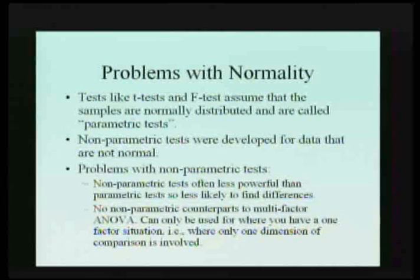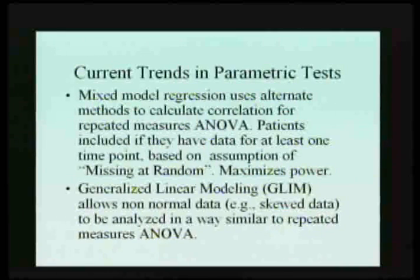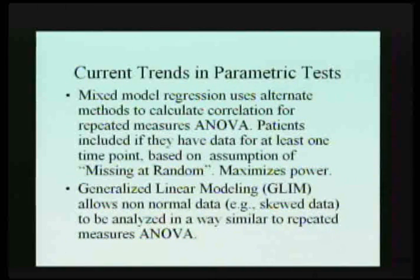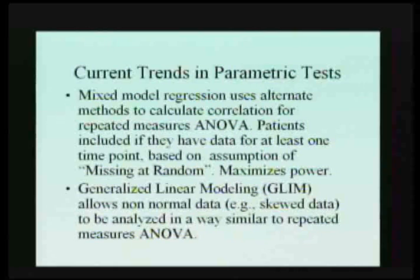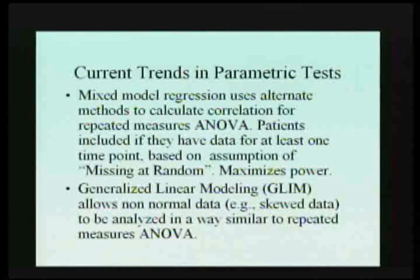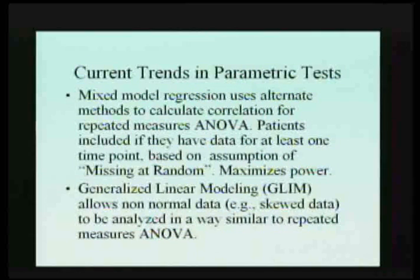Non-parametric tests are somewhat old-fashioned for two reasons: they are not as powerful — you're less likely to find a significant difference — and no one has developed non-parametric counterparts to things like multi-way ANOVA, so you're limited in how you can use them. Normal distribution means it has to look like a bell-shaped curve.